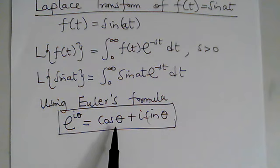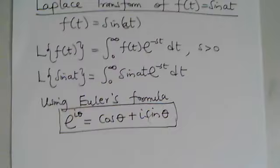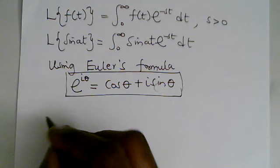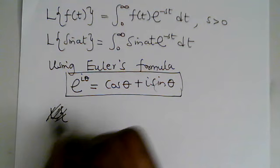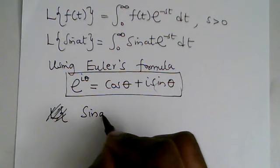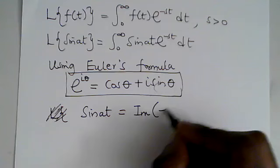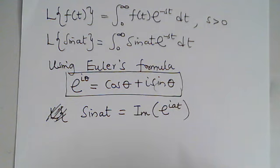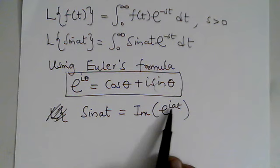We want to write sin(at) as the imaginary part of e^(iat). Notice that the formula uses theta, but here we have at, so in place of theta we put at, giving e^(iat). So in place of sin(at) we are going to use the imaginary part of e^(iat).